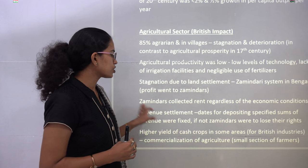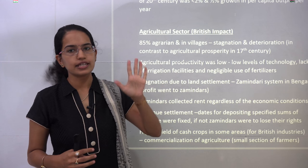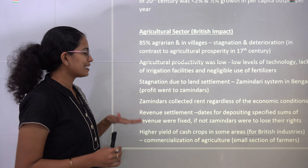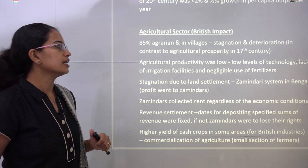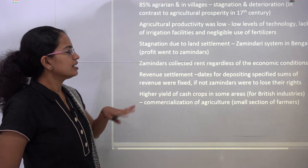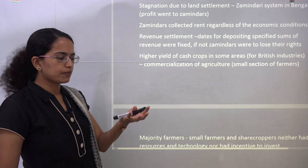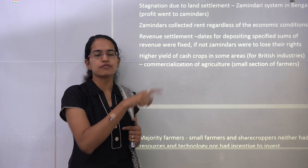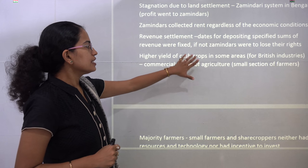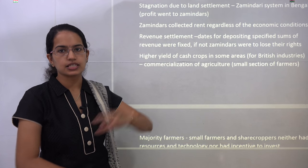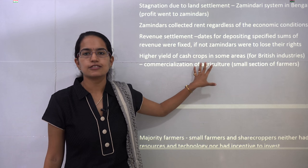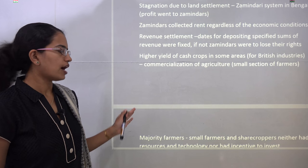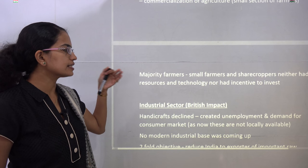If zamindars didn't collect, they would lose their zamindari, so they worked hard to collect revenue by hook or crook. This badly affected farmers and led to stagnation of agriculture with low productivity, low technology, lack of irrigation, and nearly no use of fertilizers. Only a few farmers adopted commercial cropping, and that was again for British use, as these cash crops were sent to British industries. Commercialization of agriculture occurred only for a few farmers; the majority of farmers and sharecroppers saw their situation worsen.